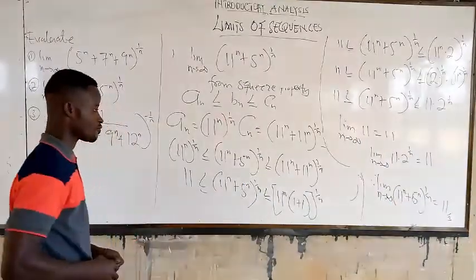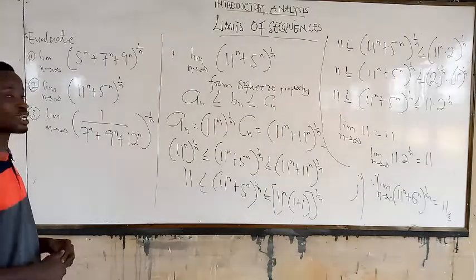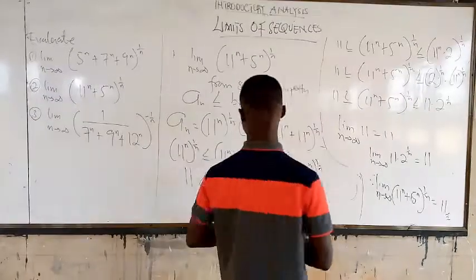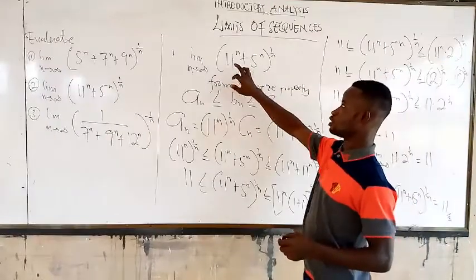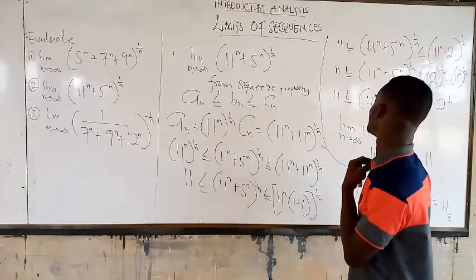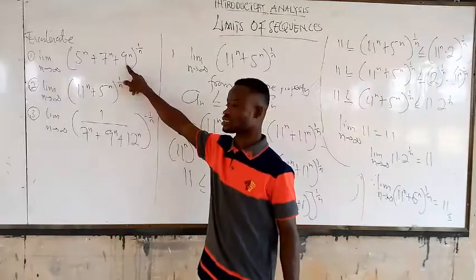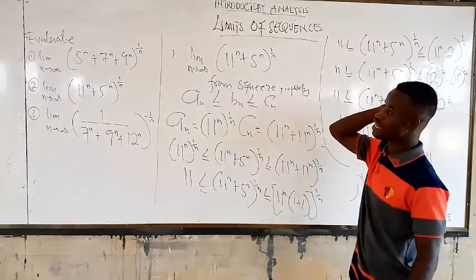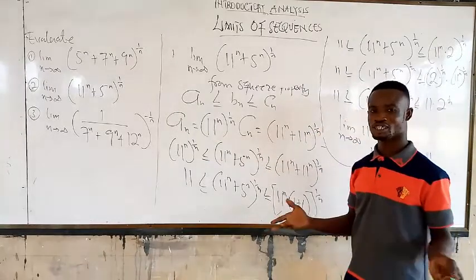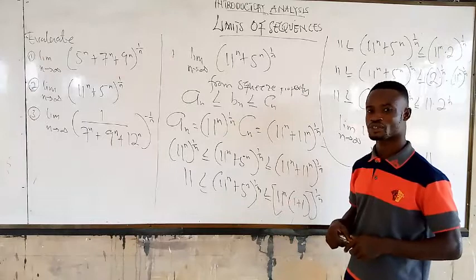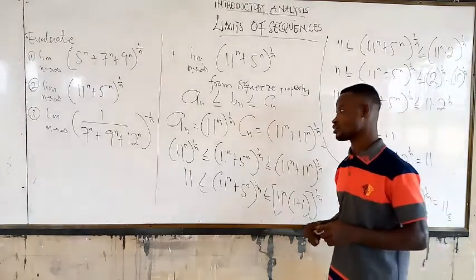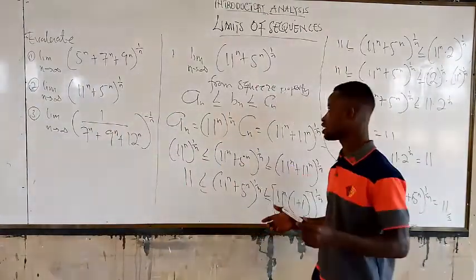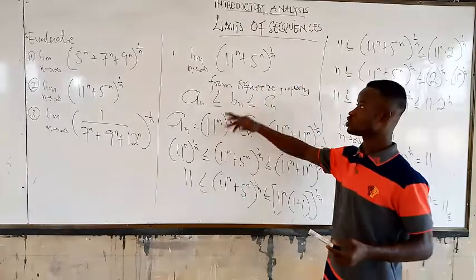That is the final answer. I hope it is as easy as that. Notice something: if the greatest value is 11, the result is 11. And the first one — the greatest value was 9, and our answer was 9. So that is just telling you that if you have a multiple-choice question like this, you don't need to work it out — the answer is simply the greatest value.